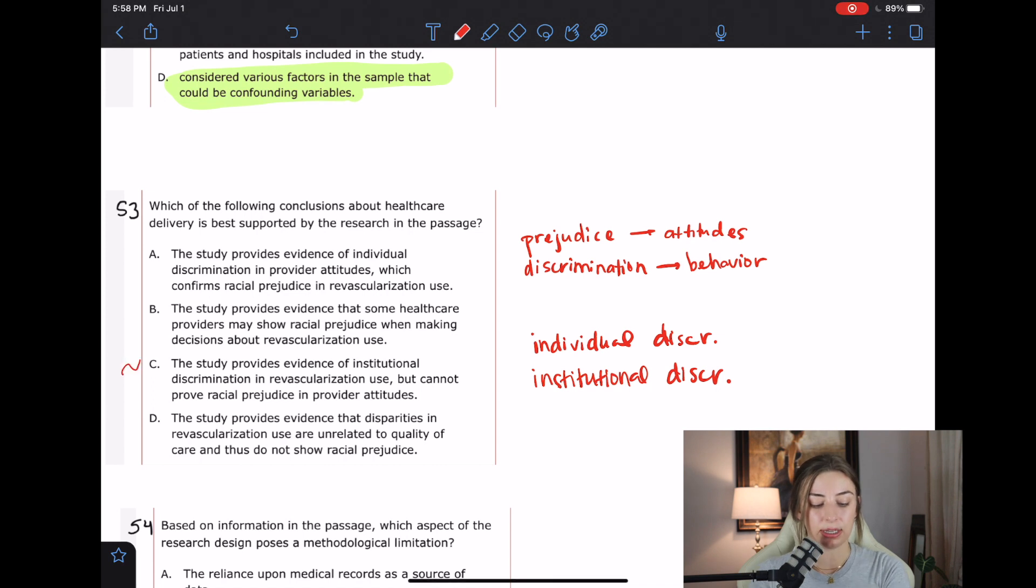D, the study provides evidence that disparities in revascularization use are unrelated to quality of care and thus do not show racial prejudice. I don't think that the study provides that evidence at all. I think it probably is related to quality of care. So I would go with C.